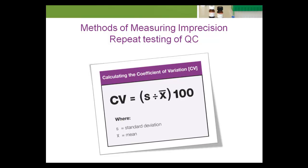To calculate CV, divide the standard deviation by the mean, and then convert the result into a percent by multiplying by 100.